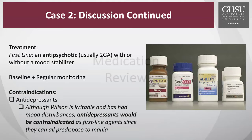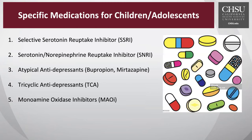For our next section, we're going to take a look at a medication review and run through some of the different classes — specifically SSRIs or Selective Serotonin Reuptake Inhibitors, serotonin-norepinephrine reuptake inhibitors or SNRIs, atypical antidepressants such as bupropion and mirtazapine, tricyclic antidepressants — which we rarely use in adolescence but still appear on board exams — and monoamine oxidase inhibitors, also very rare to use these days, especially in children and adolescents.